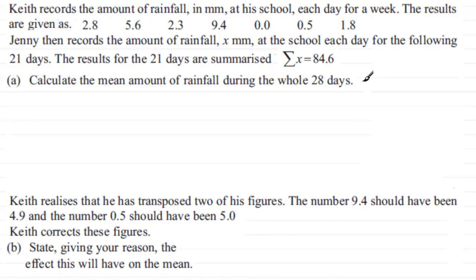In part (a) we've got to calculate the mean amount of rainfall during the whole 28 days. Well to calculate the mean, all I would want to do is just total up what that total rainfall was for the 28 days and then share that total rainfall between 28, divided by 28 in other words.